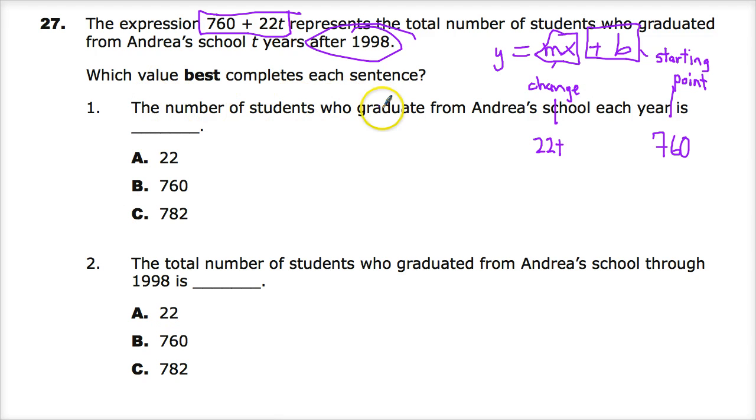The question says, the first one, the number of students who graduate from Andrea's school each year is what? So, if we're starting at 760 and each year I'm going to add 22 repeatedly, that part that's changing, which would be the number of graduates that change the overall number, that's where the 22 comes in.